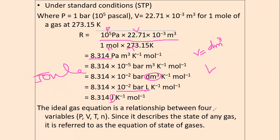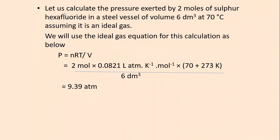The ideal gas equation is a relationship between four variables: pressure, volume, temperature, and number of moles. Since it describes the state of any gas, it is referred to as the equation of state of gases.